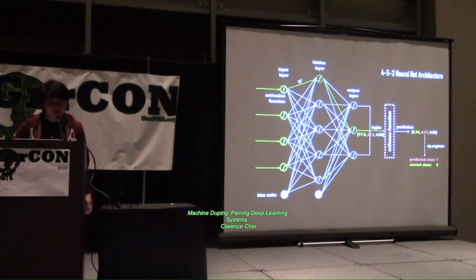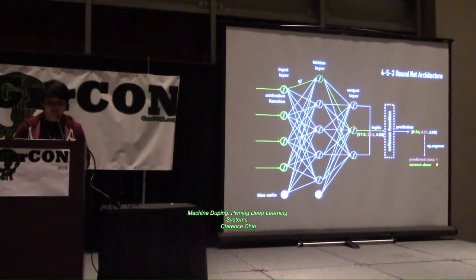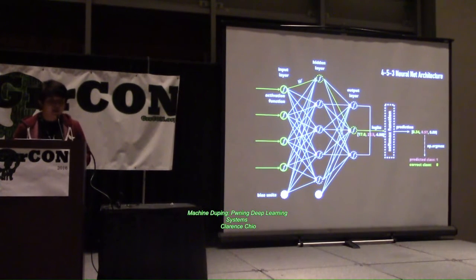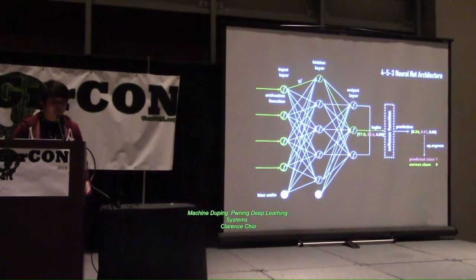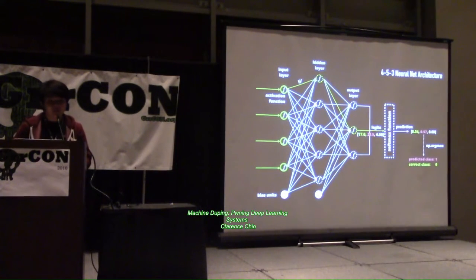This is what a standard neural net looks like — a 4-5-3 architecture. That simply means a three-layer network: the first layer has four input units, the hidden layer has five units, and the output layer has three units. Each unit is just an activation function — a simple linear function that turns the unit on or off. One of the most common is the sigmoid function: if the input value is below zero, the output is zero; if above zero, the output is positive.